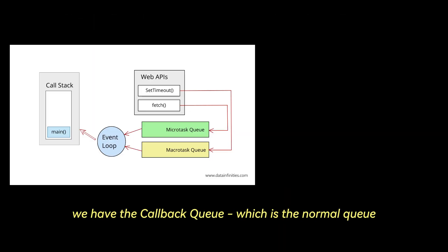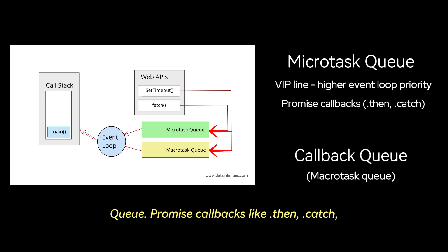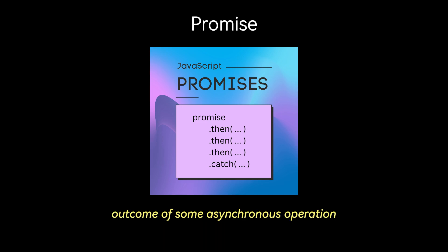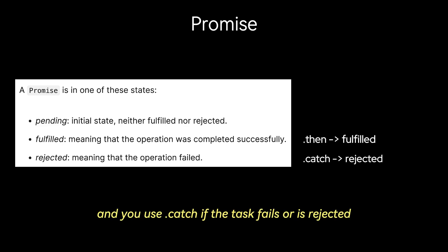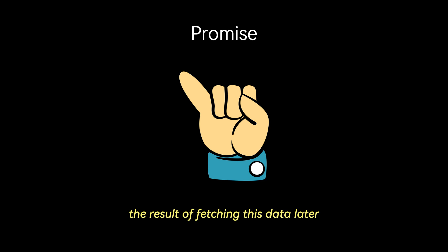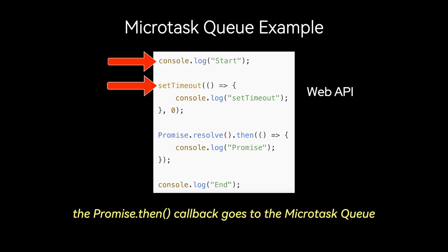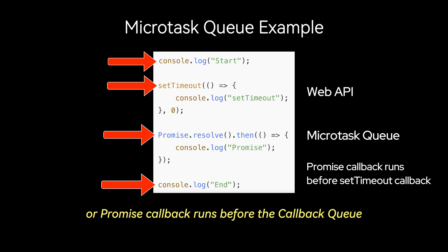There are two kinds of queues: the callback queue, which is the normal queue, and the microtask queue, which you can think of as the VIP line. The microtask queue has higher priority than the callback queue. Promise callbacks like .then, .catch, and .finally, as well as queueMicrotask, are examples of microtasks, and they are handled before all callbacks, even if scheduled later. A promise is a placeholder for a future result representing the eventual outcome of an asynchronous operation. It has three possible states: pending, fulfilled, and rejected. You use .then when the task is fulfilled and .catch if it's rejected. In this example, start gets logged immediately, setTimeout goes to the web API, the promise .then callback goes to the microtask queue, end is logged immediately, and then the microtask queue runs before the callback queue.